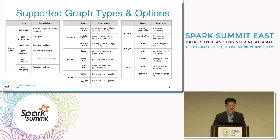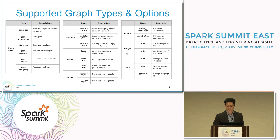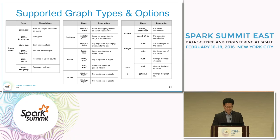Our new package supports six graph types and 15 graph options, where the options are related to positions, facets, scales, coordinates, ranges, and text. I'll show more details in the next slides.